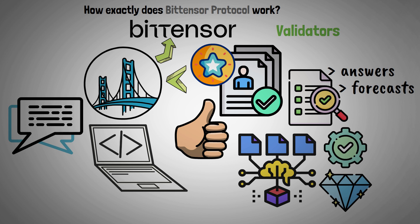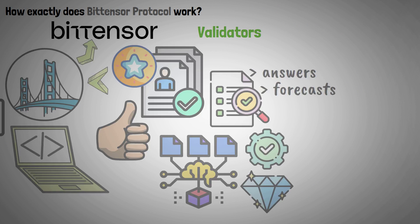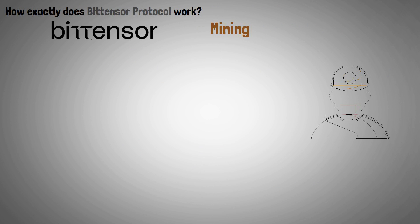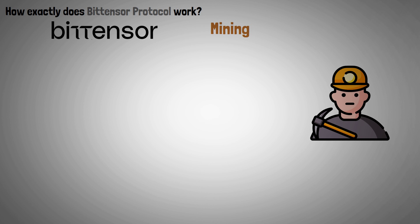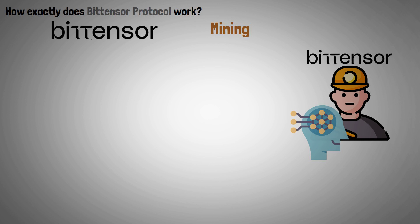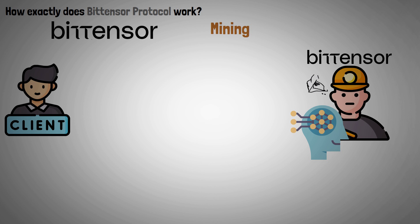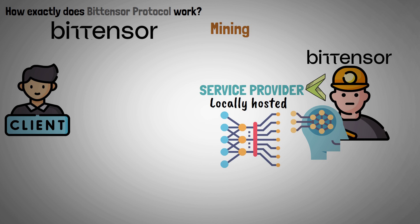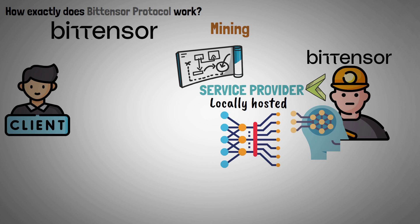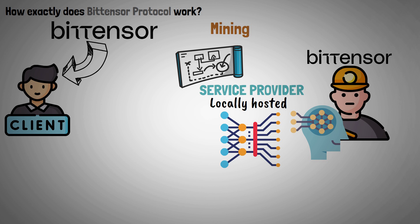Mining: Miners in the BitTensor network offer machine learning services. A client application sends a request to the BitTensor network, which forwards it to a miner who has identified themselves as a provider of the needed service. Using its locally hosted machine learning model, the miner responds to the request and uses the BitTensor network to send the prediction back to the client.